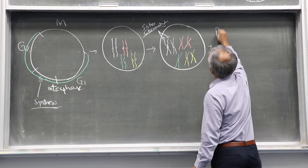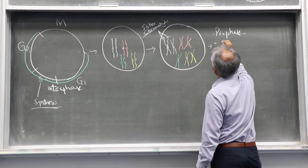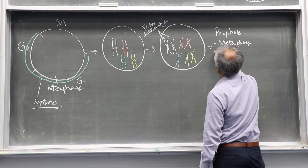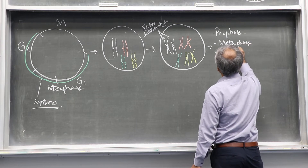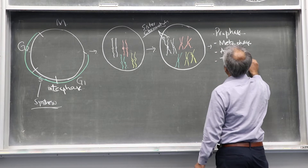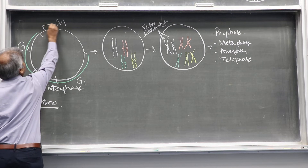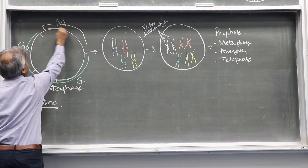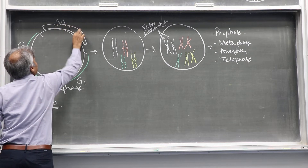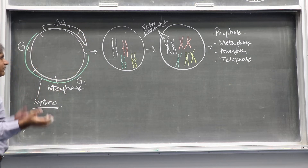Mitosis is divided into four phases. We have prophase, we have metaphase, we have anaphase, and telophase. All these four phases are actually happening here. You can say here: prophase, metaphase, anaphase, and then telophase, where two cells are going to divide.